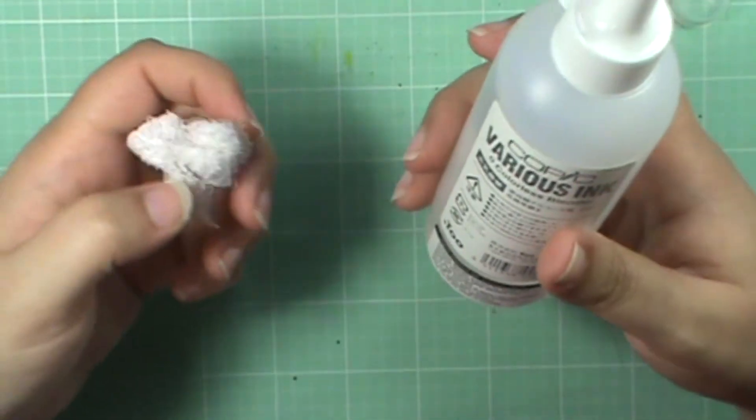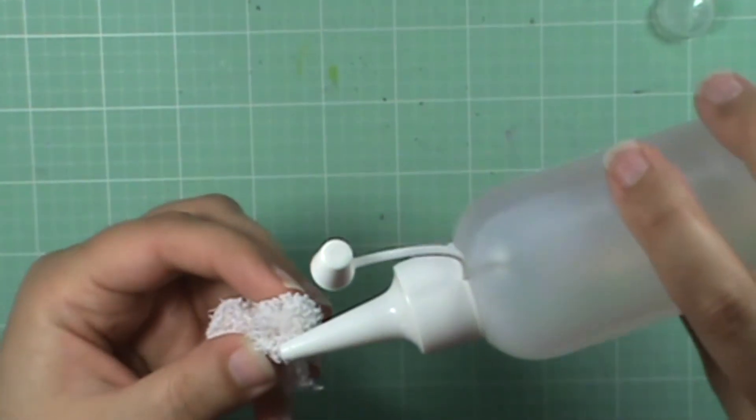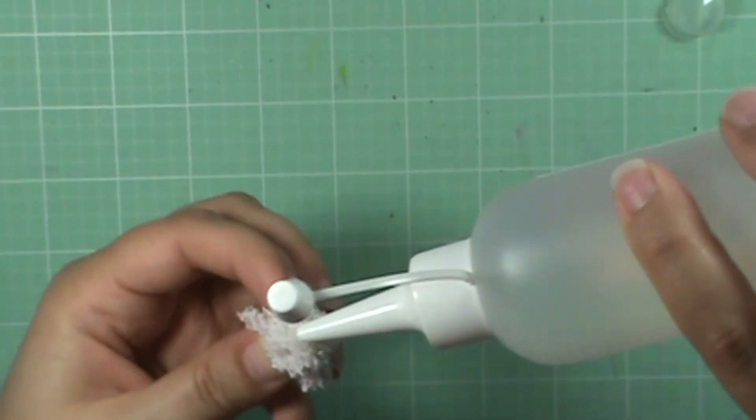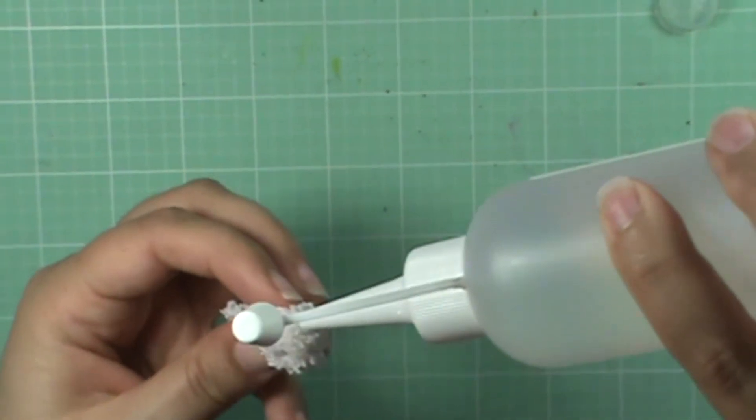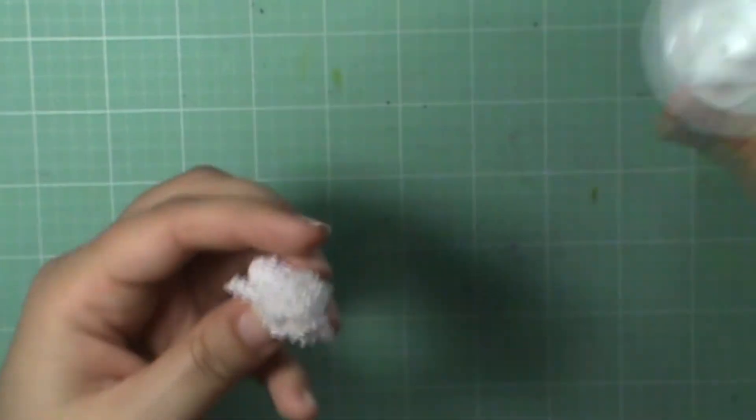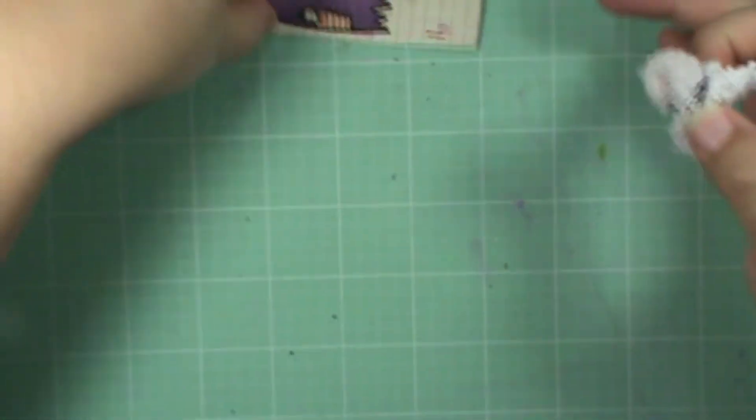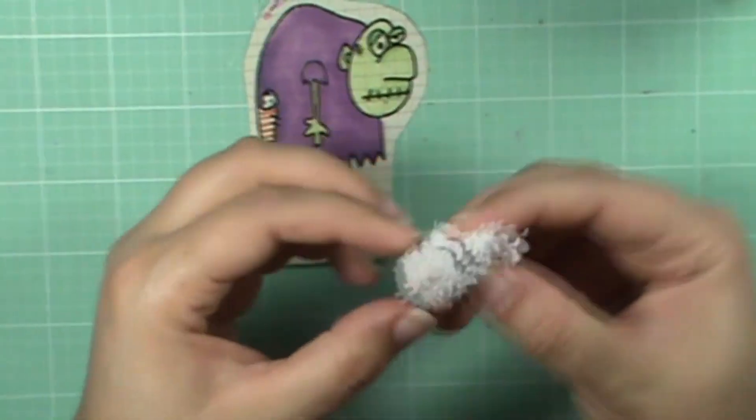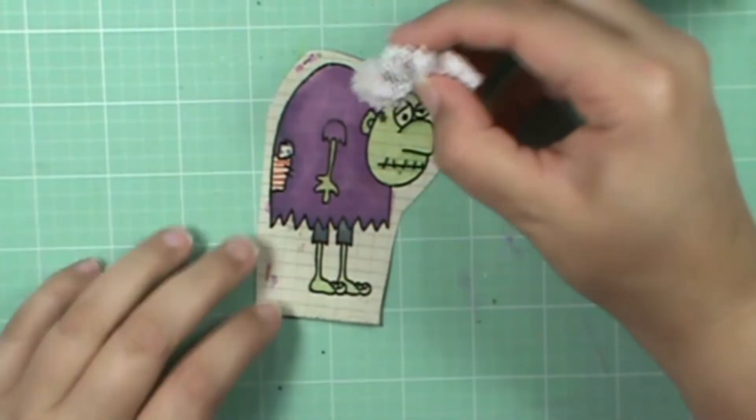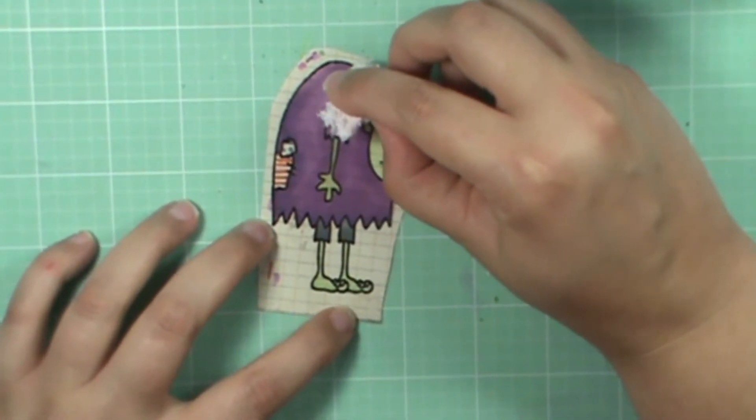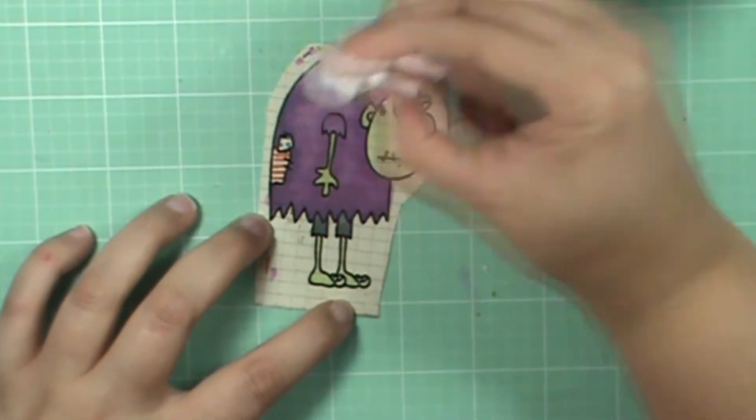So you take your colorless blender and just on the tip, give it some on the rag. Now, carefully, wherever you put this, it's going to remove the color. So I'm just going to dab and lift, dab and lift.